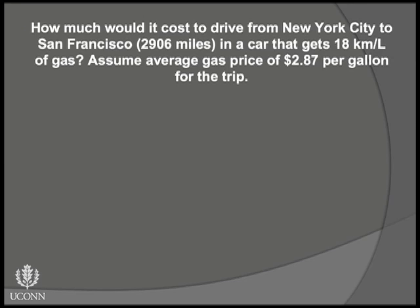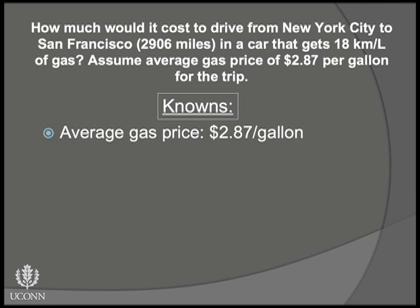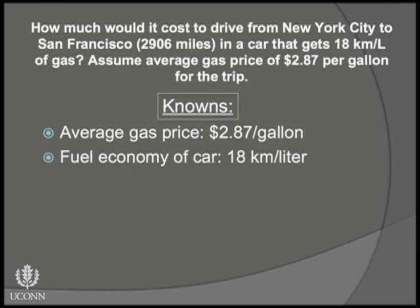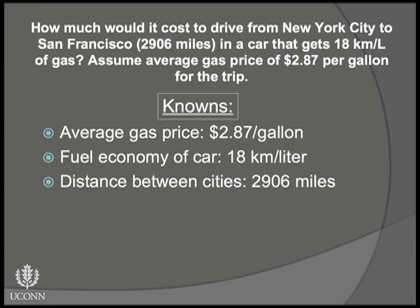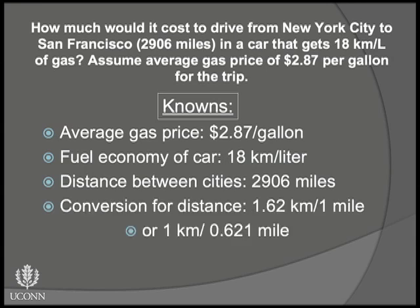Here we have the problem written as you might see it in a homework assignment: How much would it cost to drive from New York City to San Francisco, 2,906 miles, in a car that gets 18 kilometers per liter of gas? Assume an average gas price of $2.87 per gallon for the trip. A good thing to do next is lay out everything we know about the problem, including any relationships that may be helpful. We are told the average gas price is $2.87 per gallon, the fuel efficiency is 18 kilometers per liter, and the distance is 2,906 miles. We also know the conversion for miles to kilometers, and since we have two different units of volume — gallons and liters — we will probably need to find out how to relate those two things.